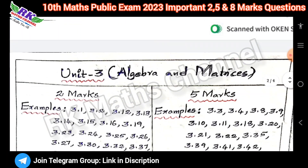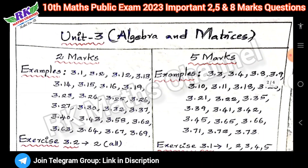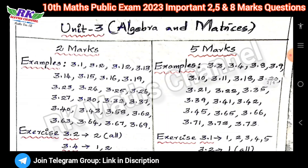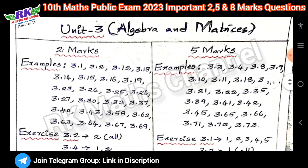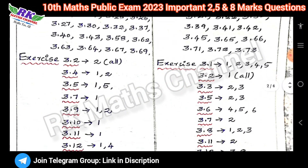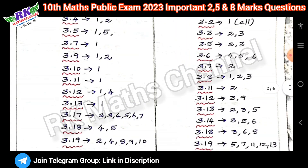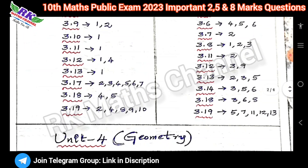Next, Unit 3: Algebra and Matrices. Algebra — 2 marks and 5 marks, examples and exercises. Graph — x is 3.15, 3.16.